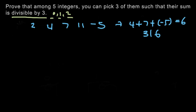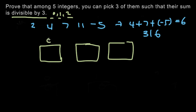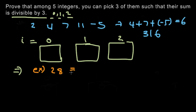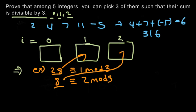So that's what we're going to use. Consider three boxes, named 0, 1, and 2. The condition is that we put a number into box i if its remainder upon division by three is i. For example, say we have the number 28. Since 28 is 1 mod 3, we would put 28 into box 1. Say we also have 8, which is 2 mod 3 — then we put 8 into box 2. And we do the same thing for all five integers.